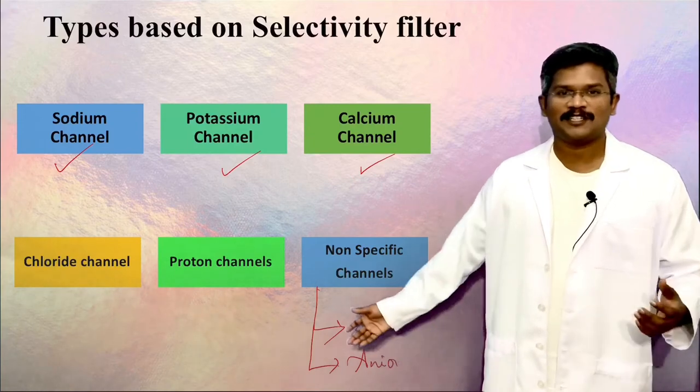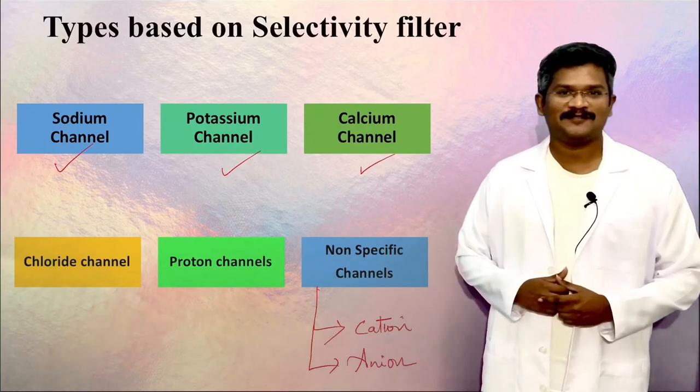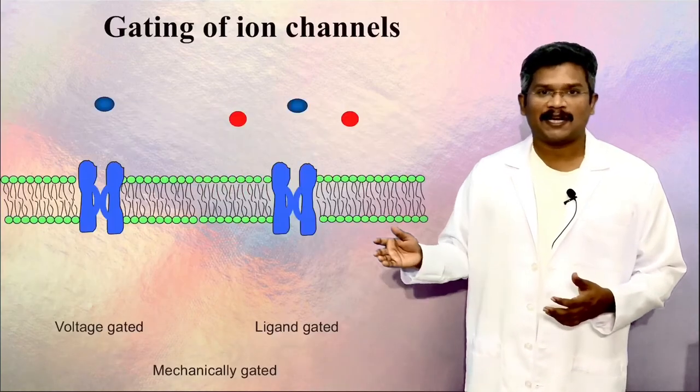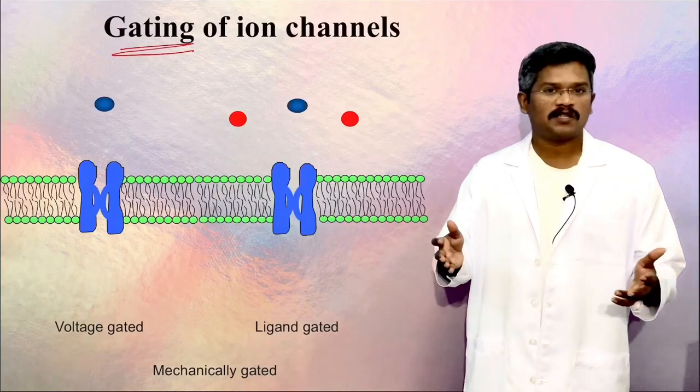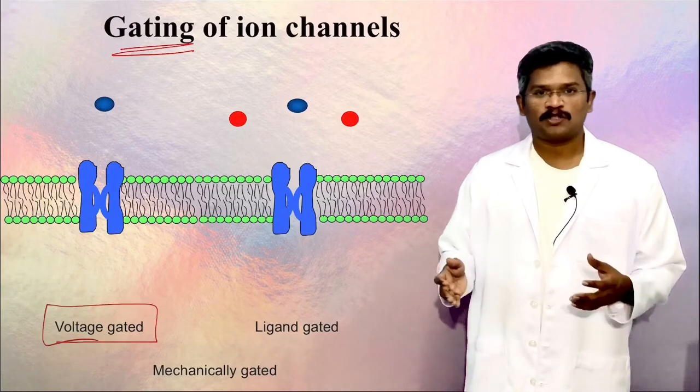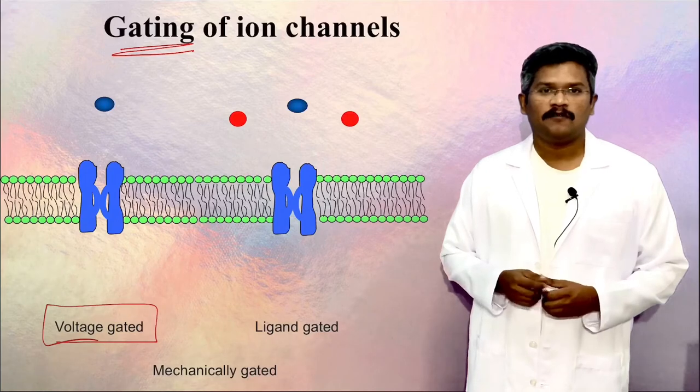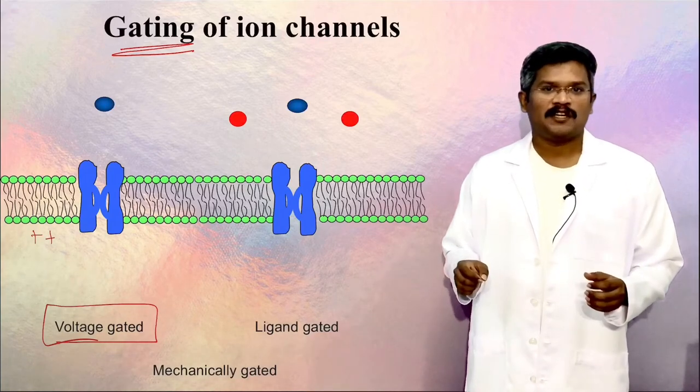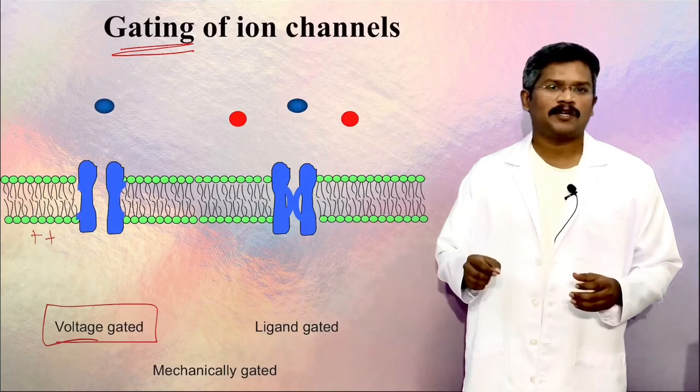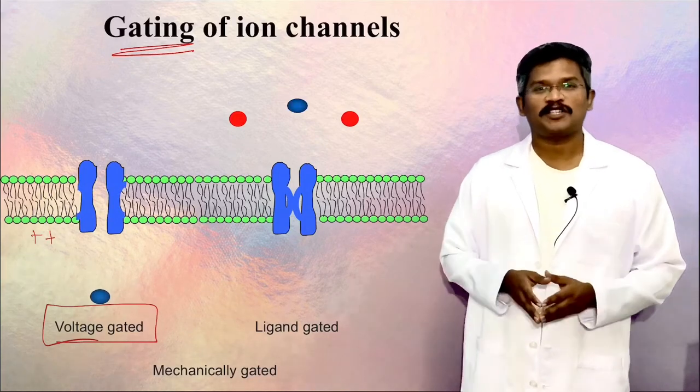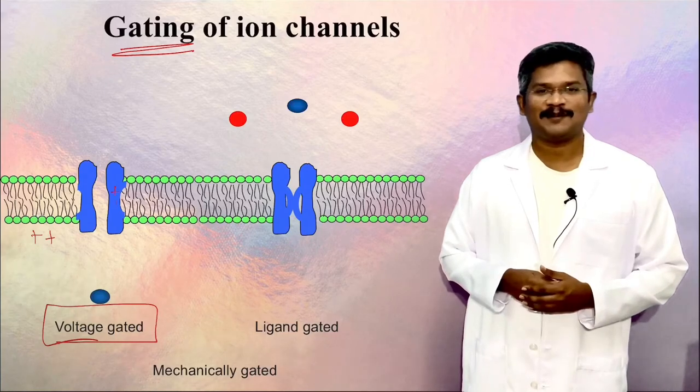Ion channels may be classified based on their gating mechanism—that is, what opens or closes them. A voltage-gated channel is opened and closed by changes in the membrane potential. For example, a voltage-gated sodium channel is opened by depolarization, and this is possible because of the presence of a voltage sensor, which is a group of positively charged amino acids present within the protein.